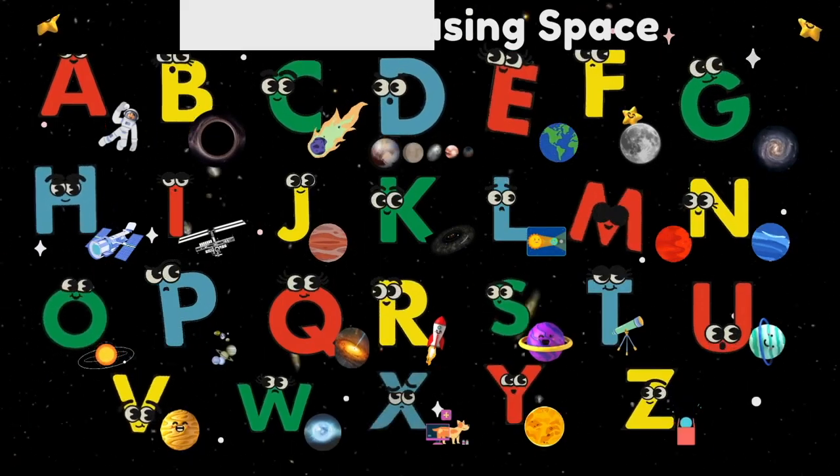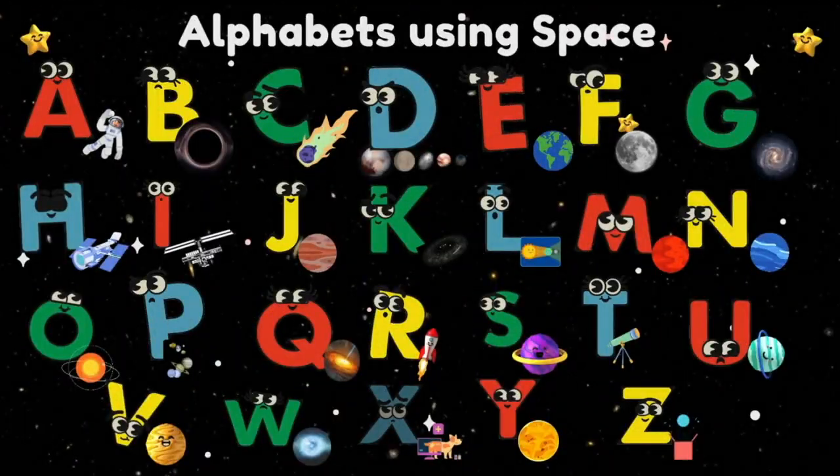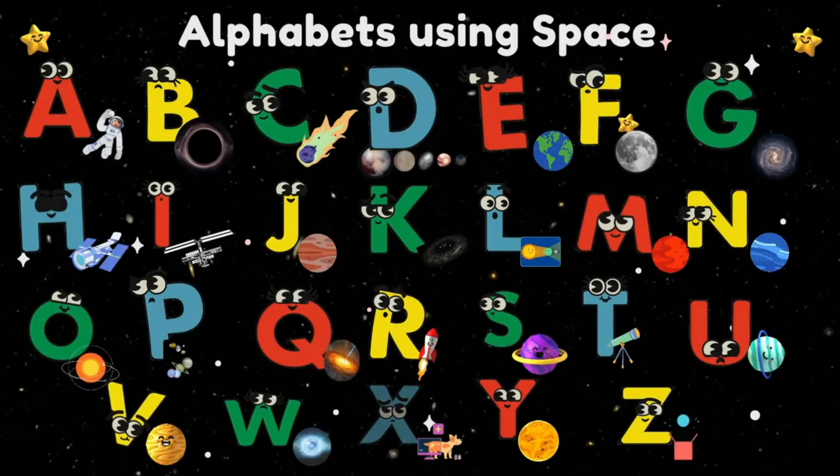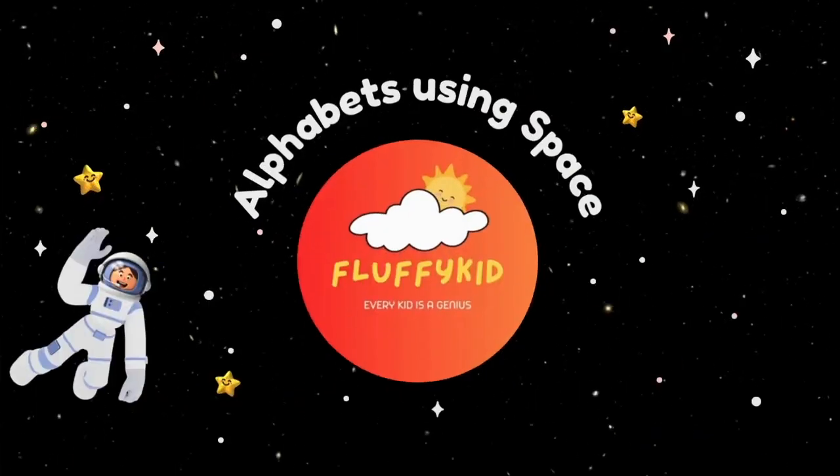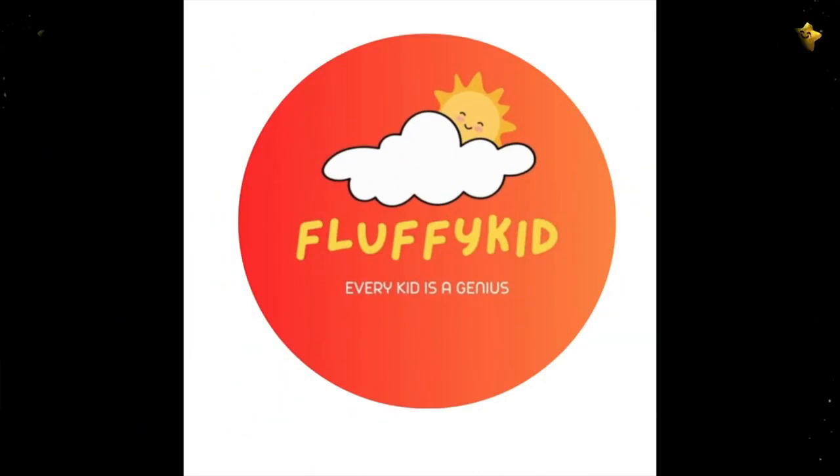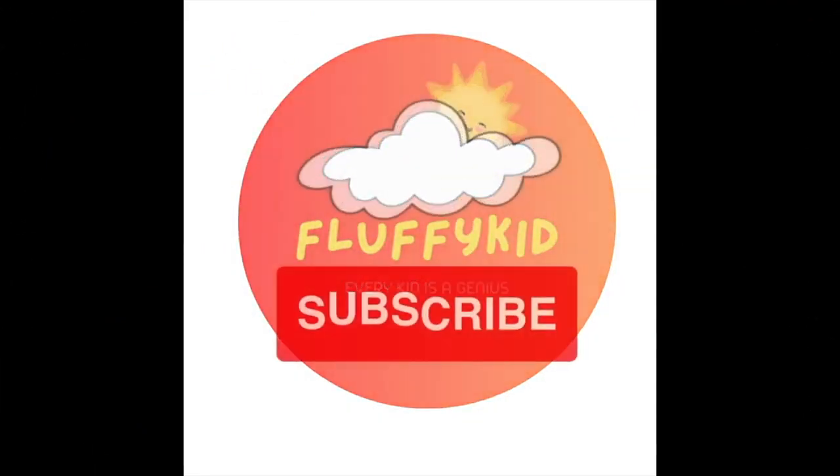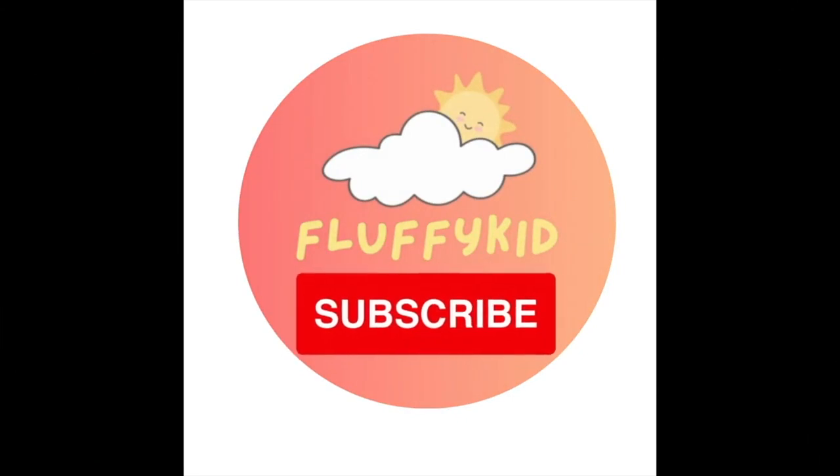You all did an awesome job learning the alphabets A to Z using things and objects from space. Learning can be fun. And remember kids, every kid is a genius. See you all next time in Fluffy Kid. Bye-bye!